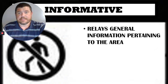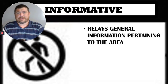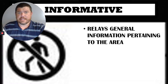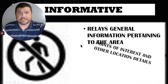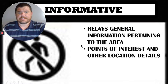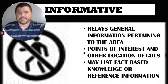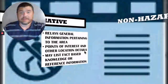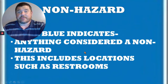The first sign is the informative sign. This sign is white with black contrast. It's not going to depict a hazardous area — it's not going to show you any hazards. It's usually just for references pertaining to certain areas, points of interest, and general information about that particular area. That's why it's called an informative sign.